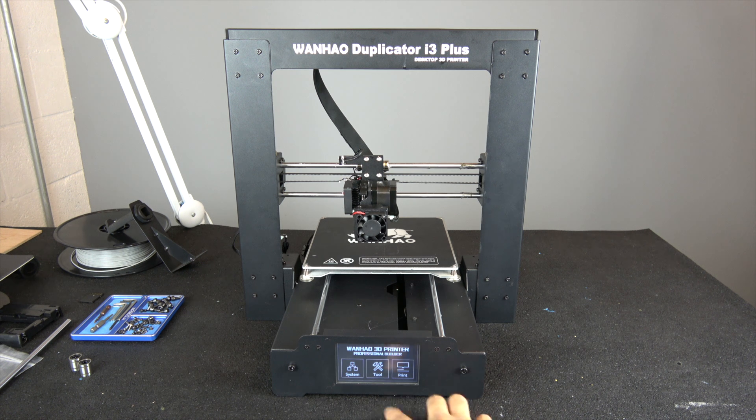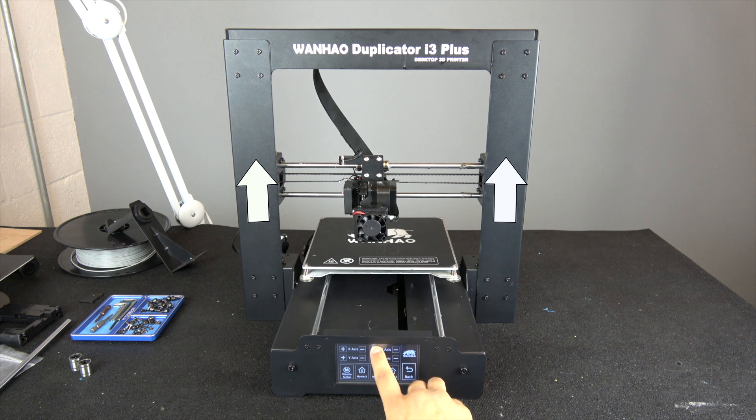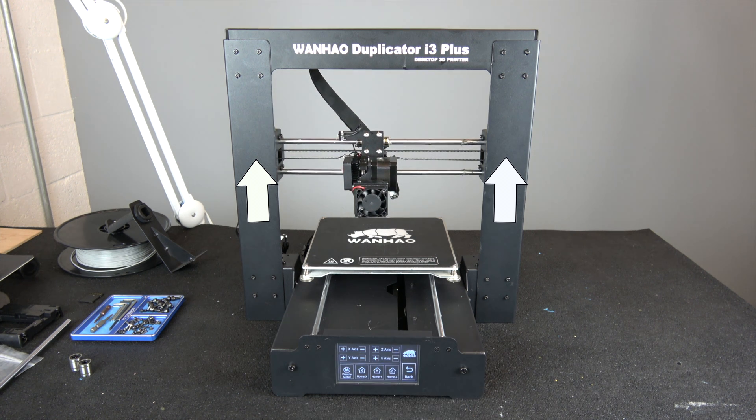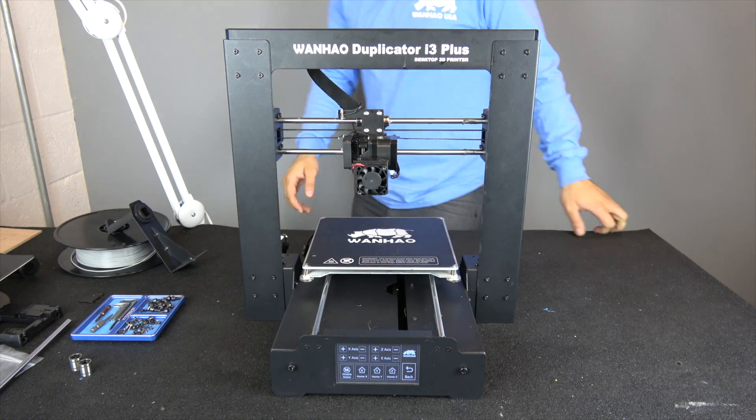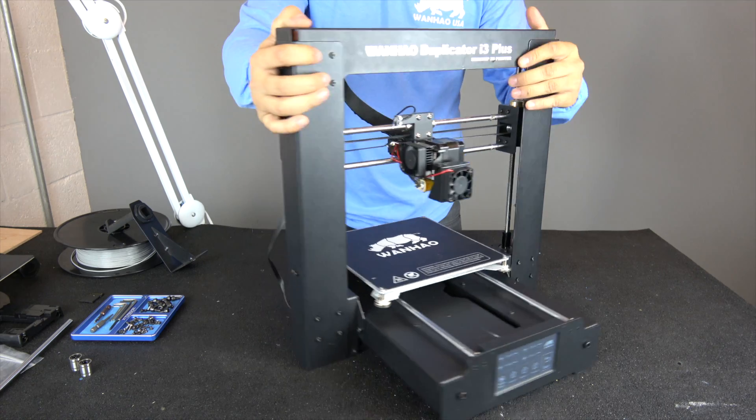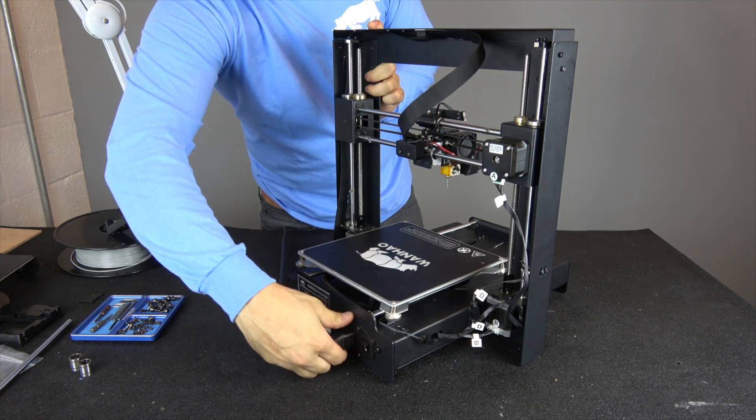First, you will want to move the extruder up to give you more room to work below. After that, you should turn off your printer and unplug it as a safety measure.